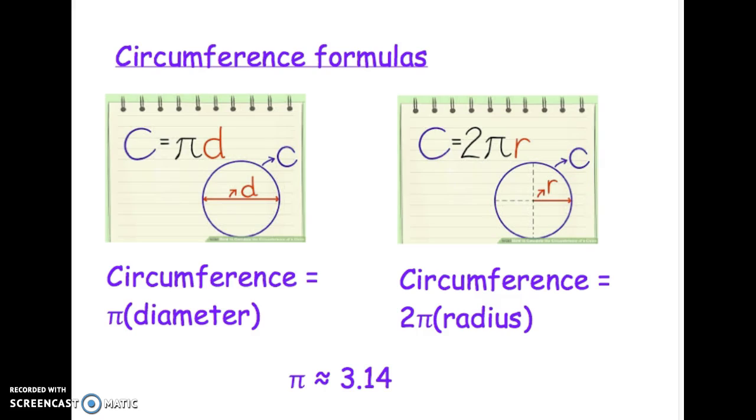We have two different formulas for finding the circumference of a circle. The first one is circumference equals π times diameter. Recall that the diameter is the distance across the circle through its center. The second one is C equals 2πr, which means the circumference equals 2 times π times the radius.